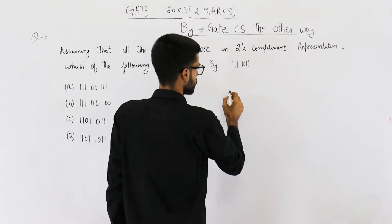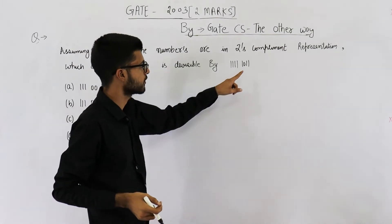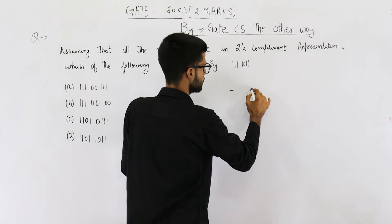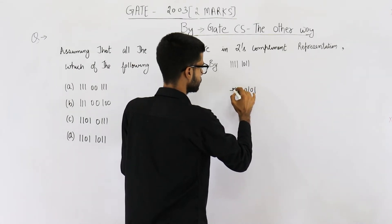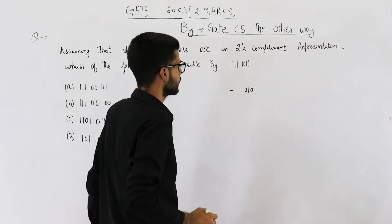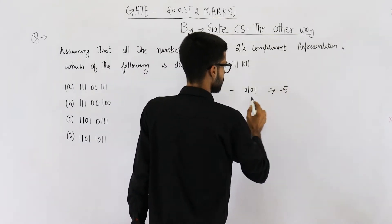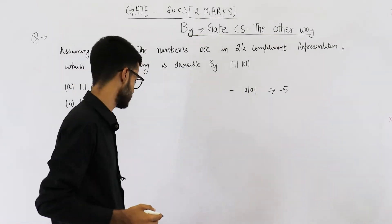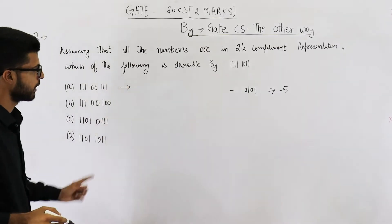Let us find the decimal equivalent of the given number. Since the most significant bit is one, put a negative sign and take the two's complement of the given number. That gives us one zero one zero followed by four zeros. The four zeros can be neglected, leaving one zero one, which is five. So this number is minus five.